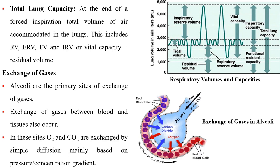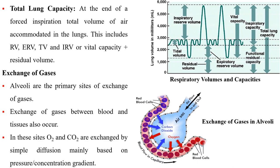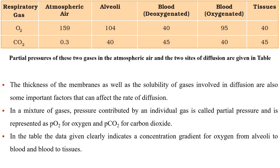Total lung capacity is the total volume of air accommodated in the lungs at the end of a forced inspiration, representing RV + ERV + TV + IRV, or vital capacity plus residual volume. Alveoli are the primary sites of exchange of gases; exchange of gases between blood and tissues also occurs at these sites. Oxygen and carbon dioxide are exchanged by simple diffusion, mainly based on pressure or concentration gradients. The table data clearly indicates a concentration gradient for oxygen from alveoli to blood and blood to tissues.